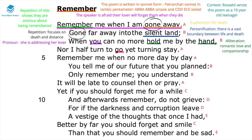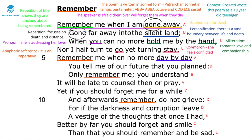In line four, 'nor I half turn to go yet turning to stay,' this is an oxymoron showing that the speaker feels really conflicted about this process of death and how their lover will cope once they die. In line five, the word 'Remember' is repeated again in line seven and then in line ten — this is anaphora, and this anaphoric reference is a constant imperative, ordering the lover: 'You have to remember me, even once I die.'